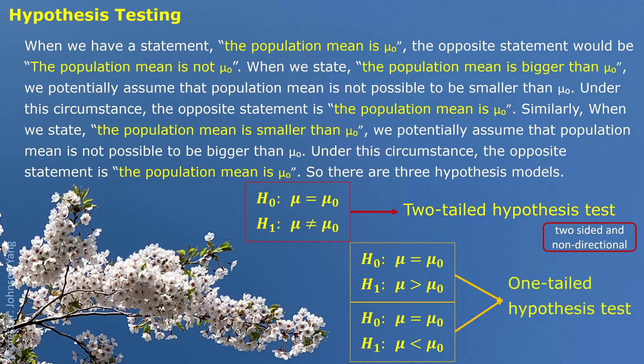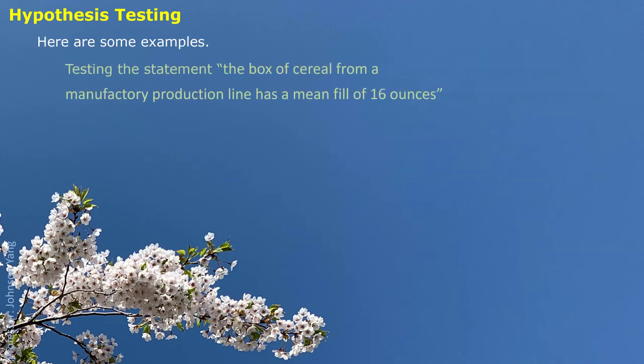For the other two models, we only need to check one side — either the right side or the left side — because we have already excluded the other side as impossible. So these two situations are called one-tailed or one-sided, and it is a directional hypothesis test. Here are some examples.